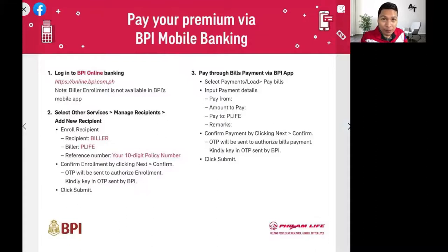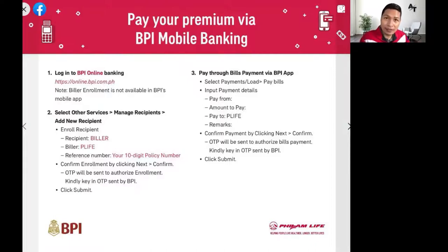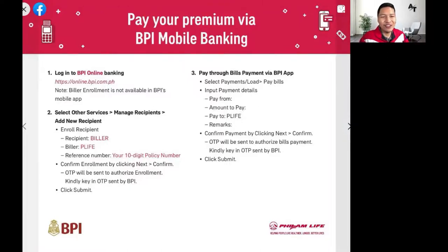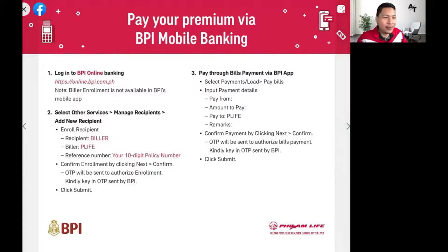Once it's added to your enrolled billers, you can now pay via the BPI app. Just go to the bills payment feature, look for your enrolled bill, input the amount, and add any optional remarks. Confirm the payment and that's it — you have now paid your Philam Life plan online through BPI.